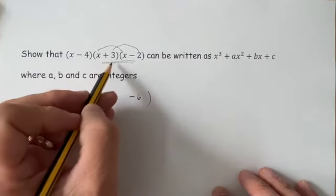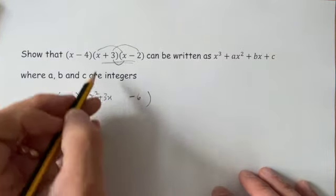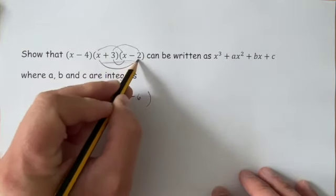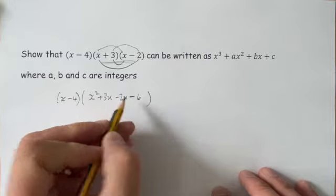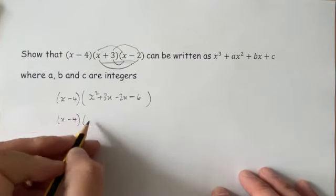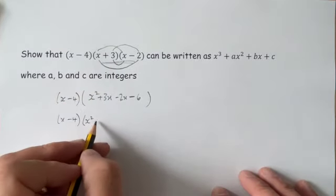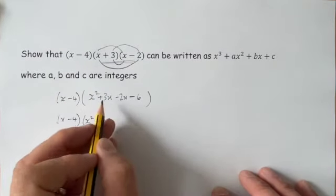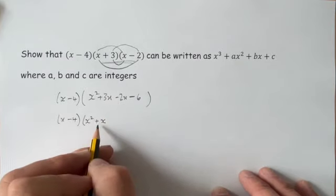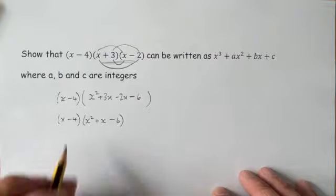Now I'll do all the work here, so that times that is a positive 3x and that times that is a minus 2x. Now you may well skip that line out and acknowledge that that multiplication and that multiplication ends up giving you 1x. 3x's take 2x's is 1x, so you may well miss that line out, but all I've done is remove those two brackets.